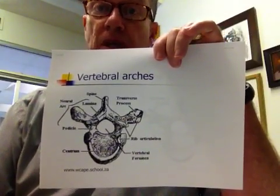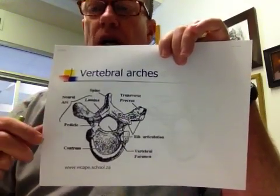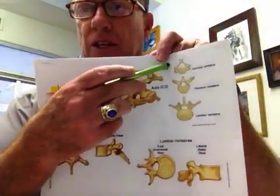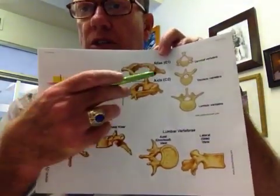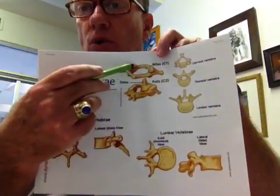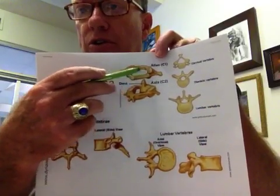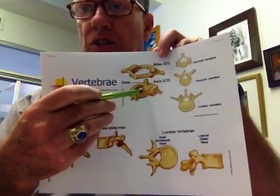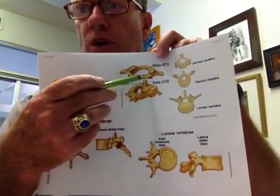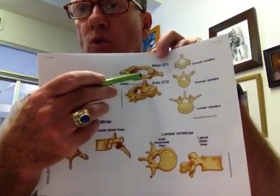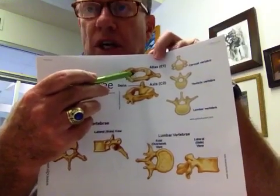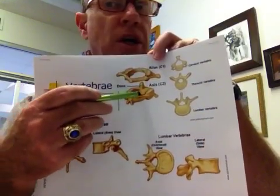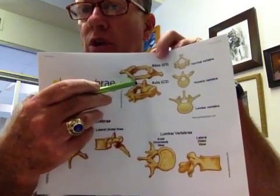The specialized vertebrae — the atlas and axis — are specialized. The atlas holds the occipital bones of the skull; here are two little fossae that receive that. The dens of C2 fits up into C1 at this articular surface. In flexion and extension, that's primarily skull and C1, and rotation happens at C1 and C2.